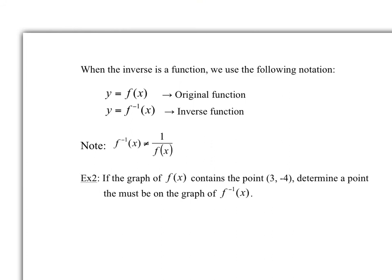When the inverse is a function, we use the notation f⁻¹(x). The original function is f(x), and the inverse is represented with that negative-one exponent. An important note: f⁻¹(x) does not equal 1/f(x). The latter is the reciprocal, which we'll see later in the course. Make sure you understand that this notation specifically means inverse, and it is not the same as the exponent rule for numbers.